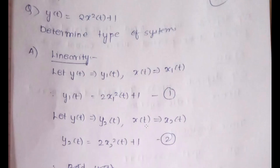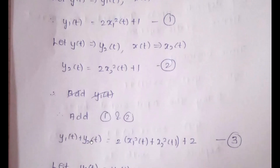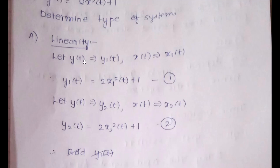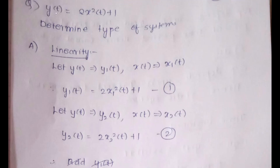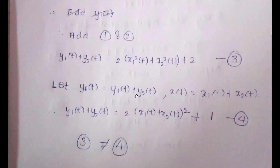Now let's solve a numerical on linearity and non-linearity. What you do is replace y(t) with y₁(t) and x(t) with x₁(t) to get equation 1; replace y(t) with y₂(t) and x(t) with x₂(t) to get equation 2; then add the two signals to get equation 3: y₁(t) + y₂(t) = 2x₁²(t) + x₂²(t) + 2. Then replace y(t) with y₁(t)+y₂(t) and x(t) with x₁(t)+x₂(t) to get equation 4. Comparing equations 3 and 4, they are not the same, hence the system is non-linear.